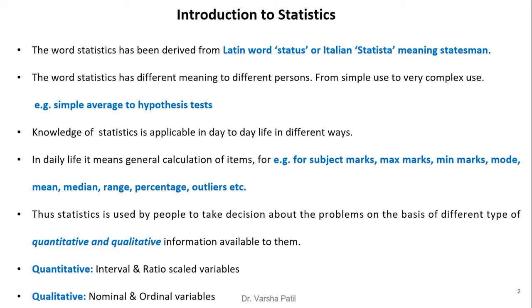Statistics is used by people to make decisions about problems on the basis of different types of quantitative and qualitative information. Variables like interval and ratio scale come under the category of quantitative, while variables like nominal and ordinal come under the category of qualitative.